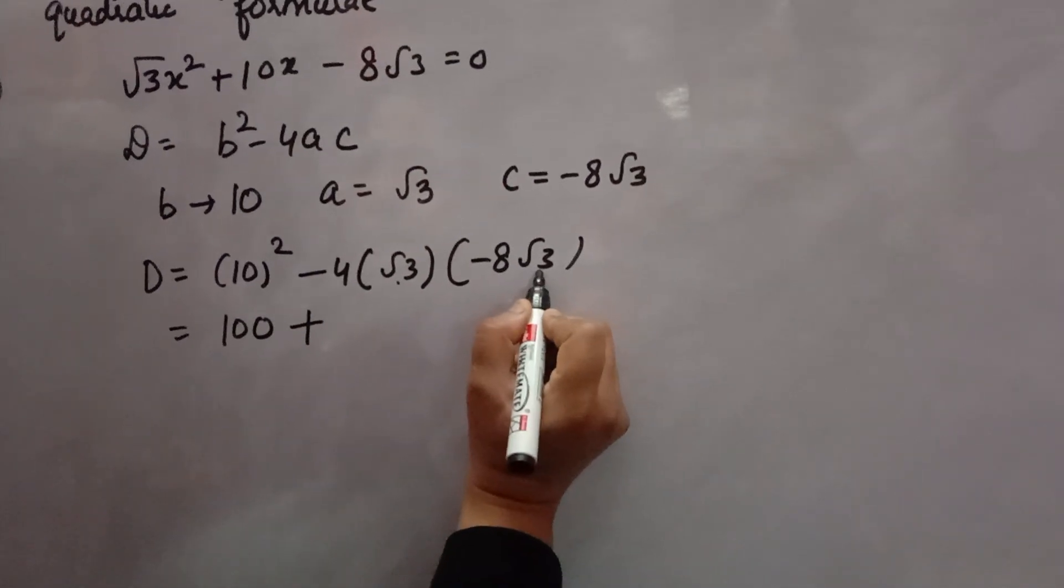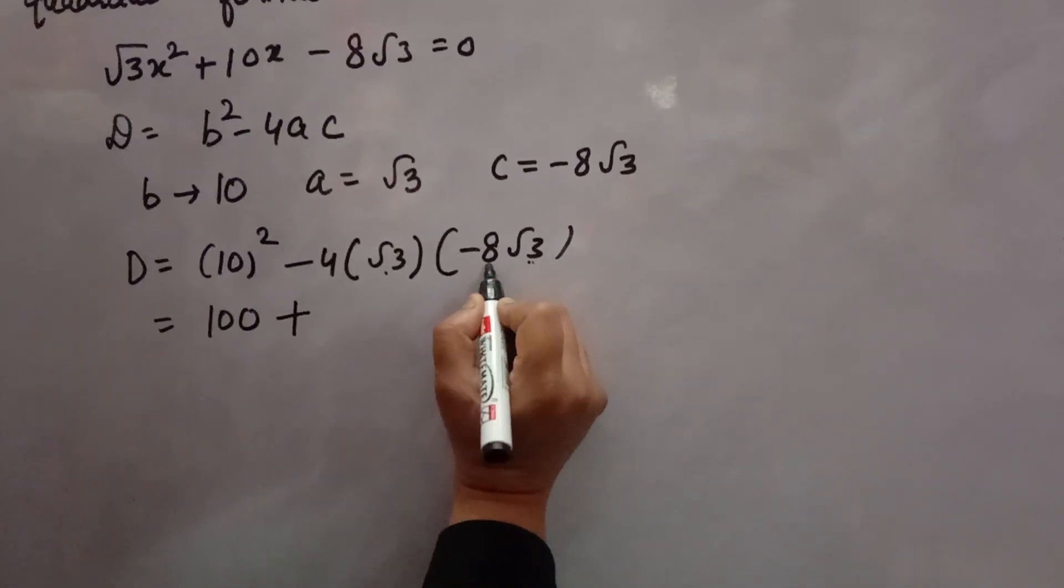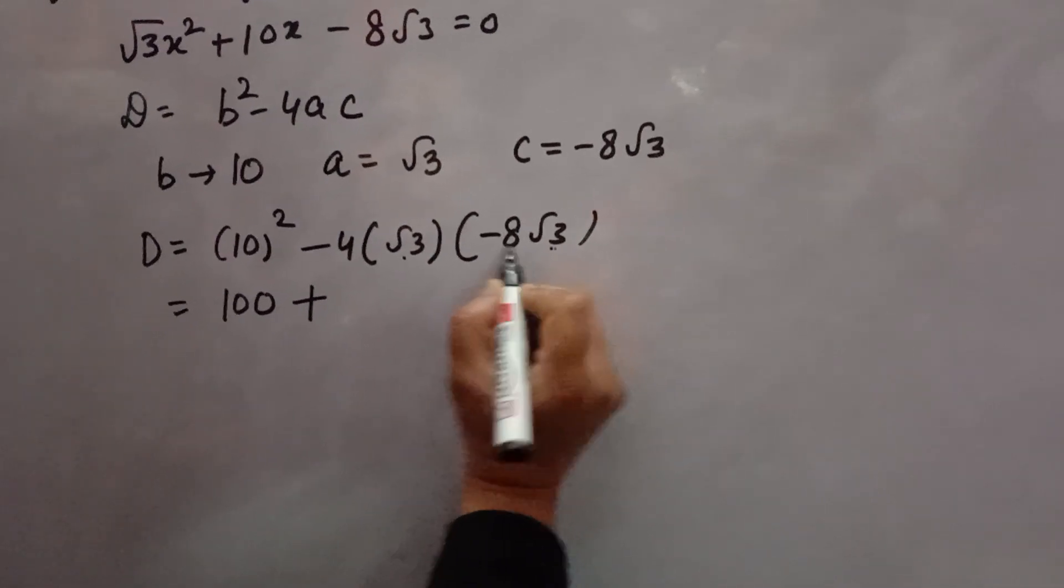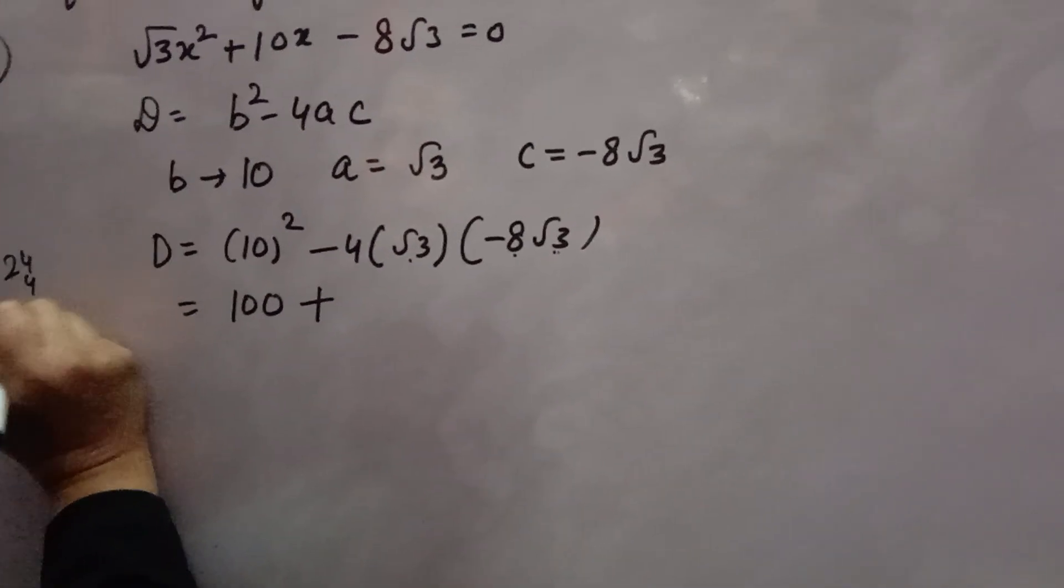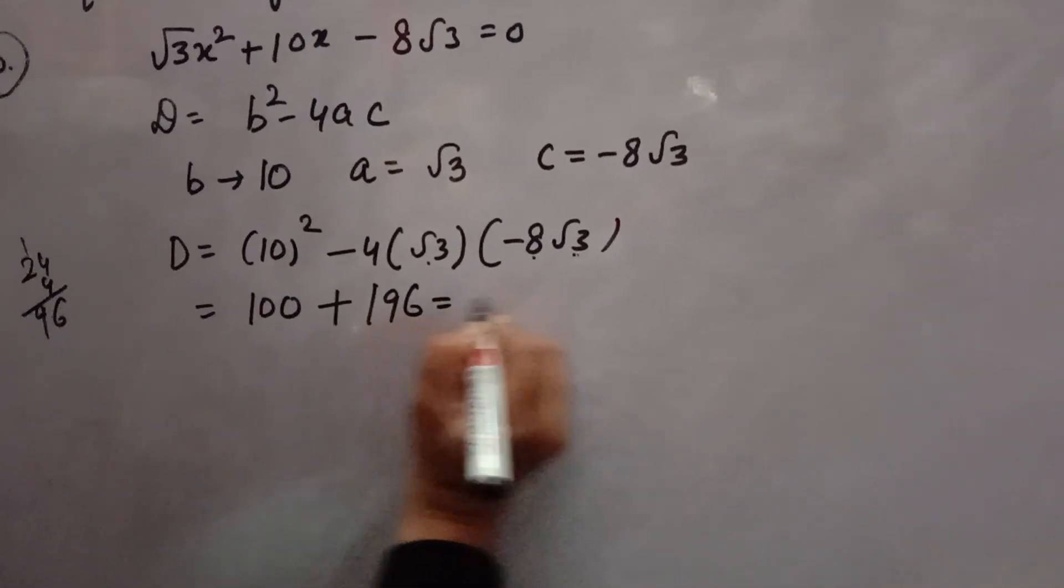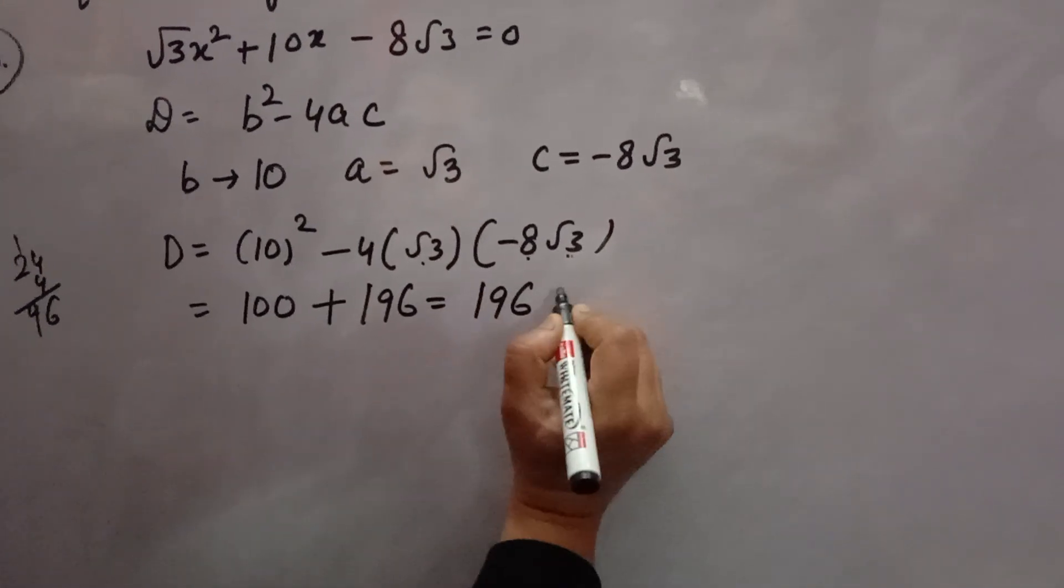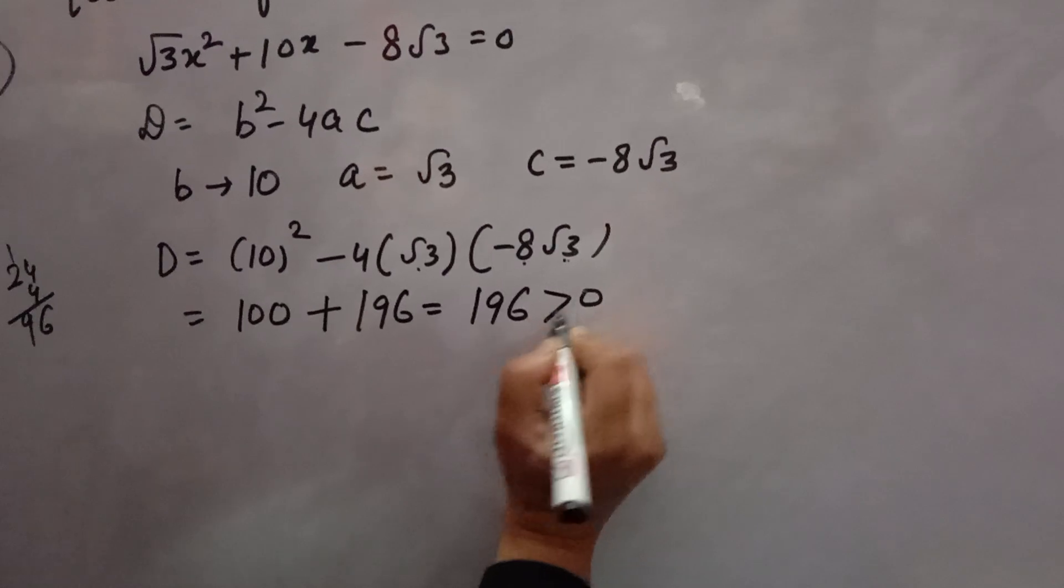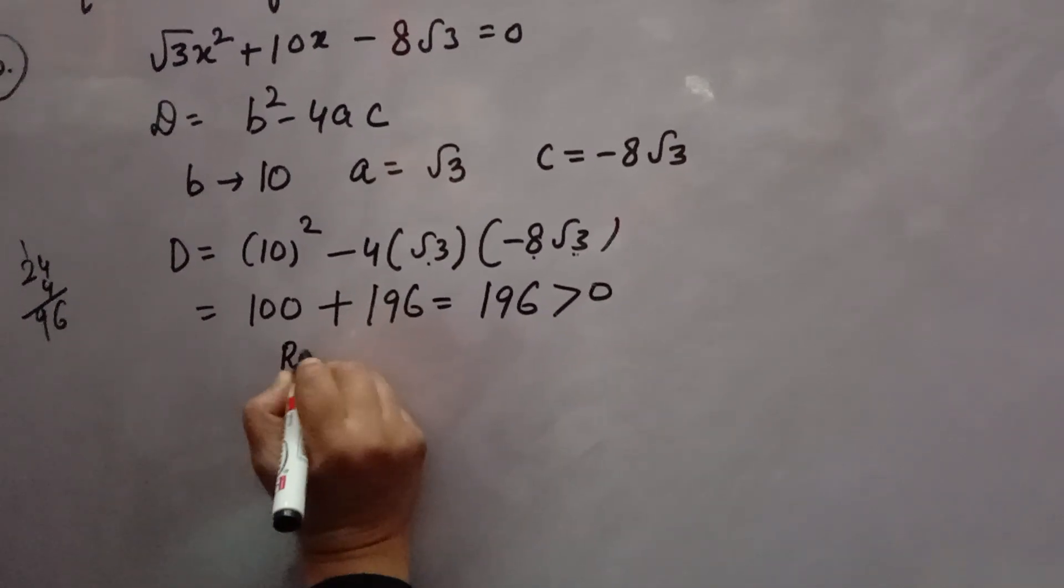Now, root 3 into root 3 is 3, 3 into 8 is 24, 24 fours is 96. That will come 196. So, 196 is the discriminant. It is coming greater than 0. That means roots exist.